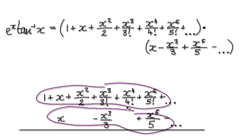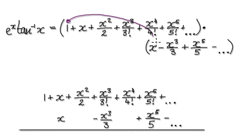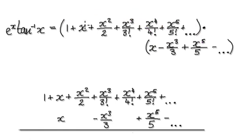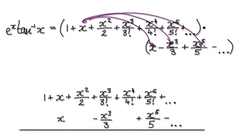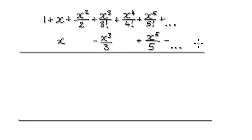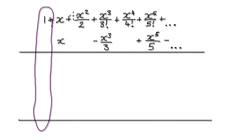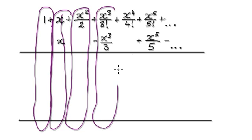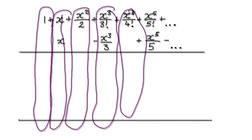Looking at this, it's going to be this times this, and then this times this, and then this times this, and so on. Imagine this as being your constant column, this is your x column, this is your x squared column, this is your x to the power of 3 column, and so on.